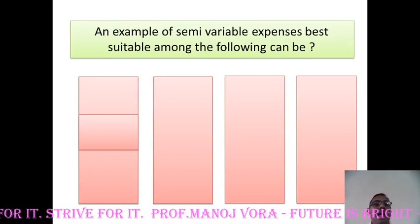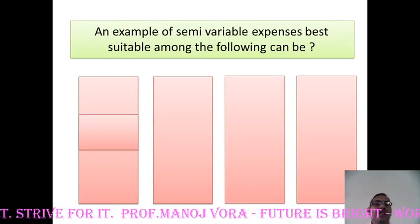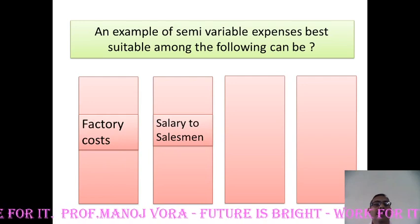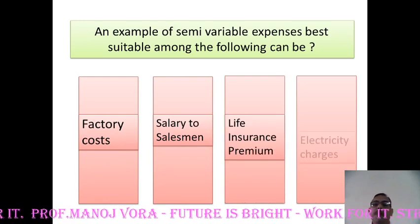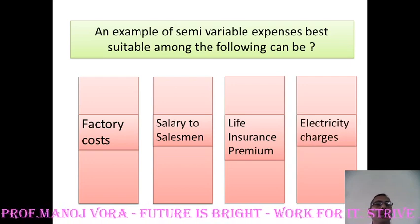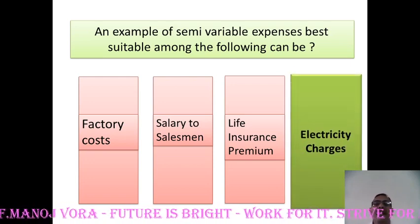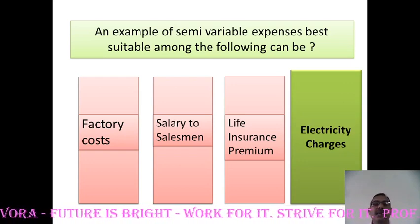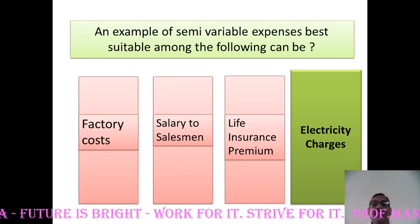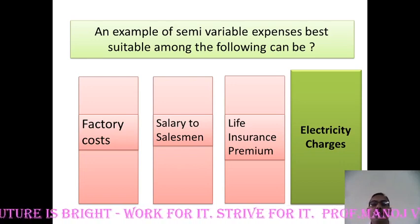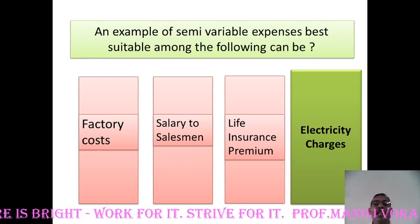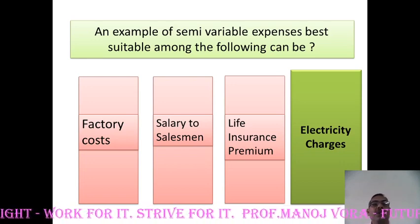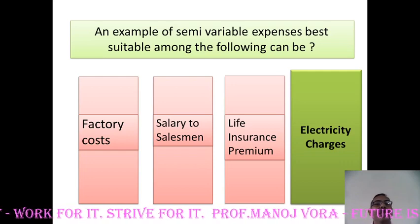Your next question: an example of semi variable expenses best suitable among the following — factory cost, salary to salesman, life insurance premium, or electricity charges. Your answer has to be electricity charges, because you have a portion of fixed cost — the fixed electricity fee for metre charges — and the variable cost pertaining to the number of units you use every month. Therefore it can be considered as semi variable.